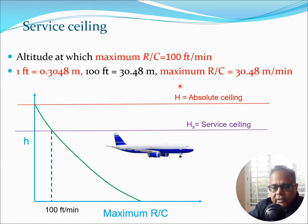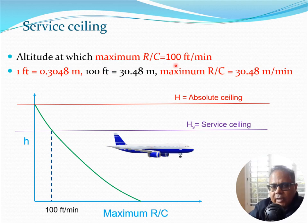Most pilots and designers would like to have some kind of factor of safety built into such an important definition, so what they have come up with is something known as the service ceiling. The service ceiling is a more conservative version of the absolute ceiling. It is defined as the altitude at which the maximum rate of climb is 100 feet per minute. Going back to this curve, we take a point at which the maximum rate of climb is 100 feet per minute, draw a dashed line, and where it intersects the curve corresponds to the service ceiling.